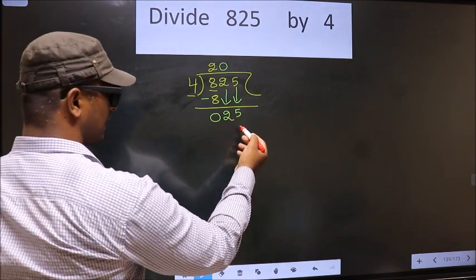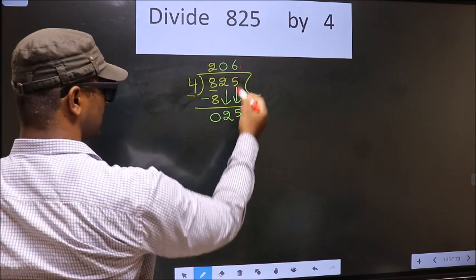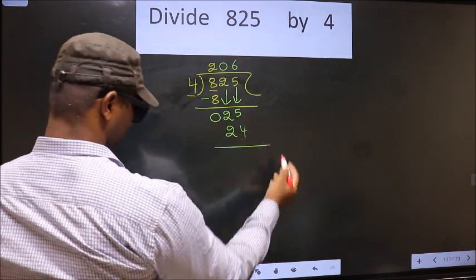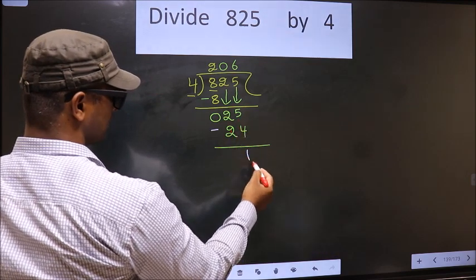So here 25. A number close to 25 in 4 table is 4, 6, 24. Now you subtract. 25 minus 24 is 1.